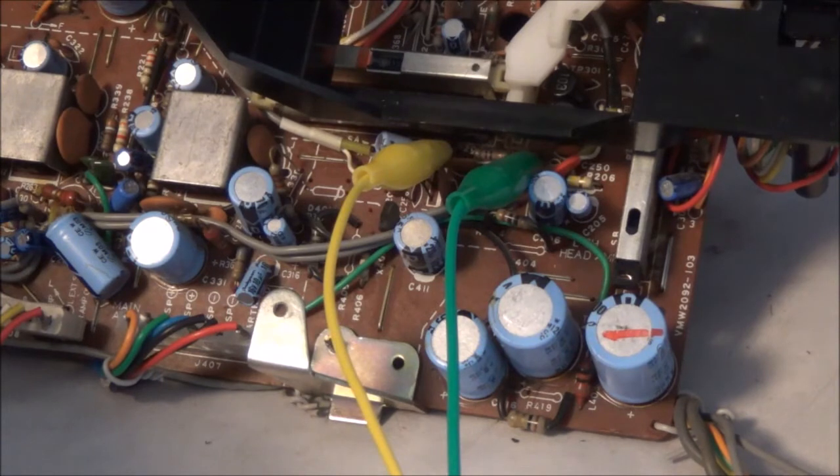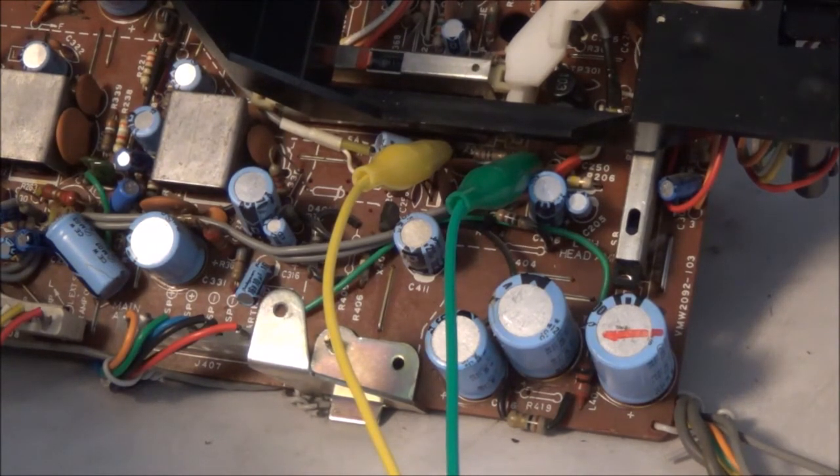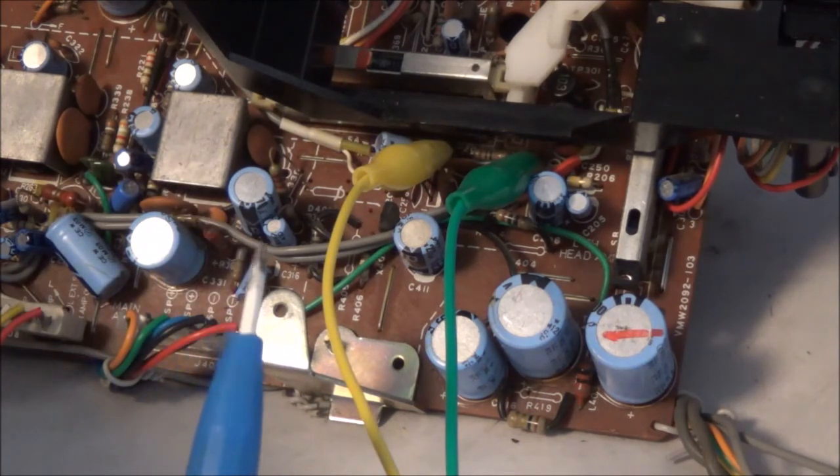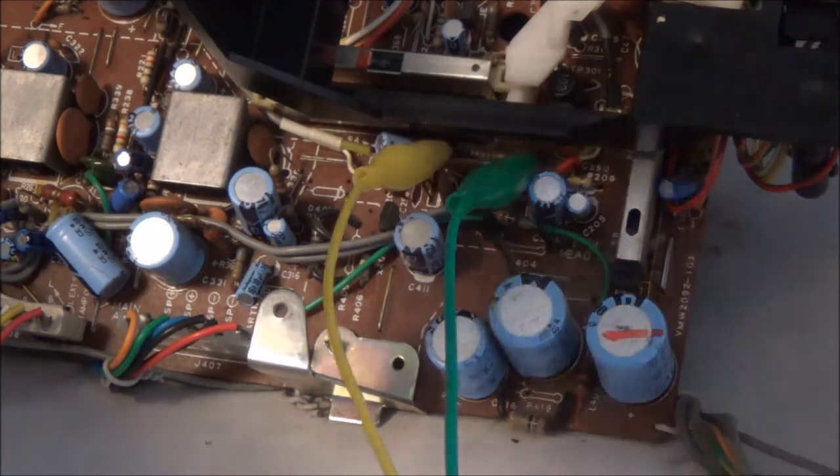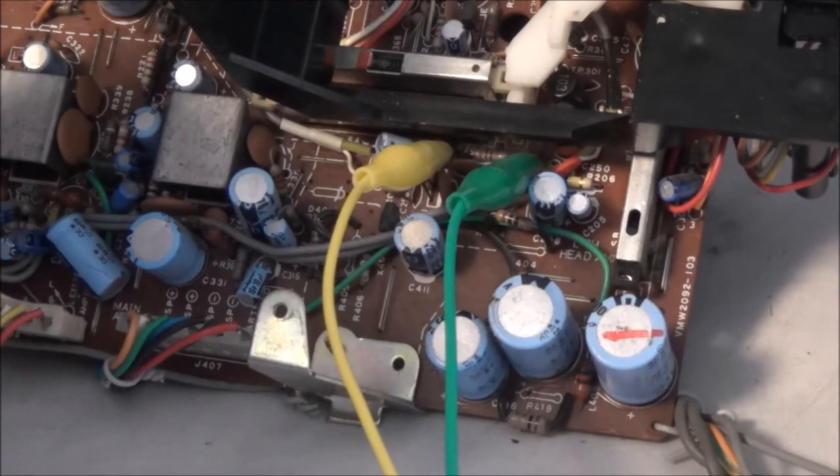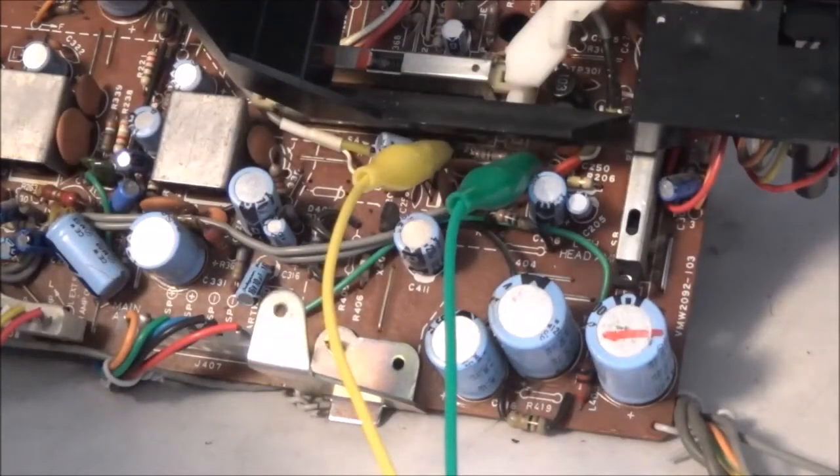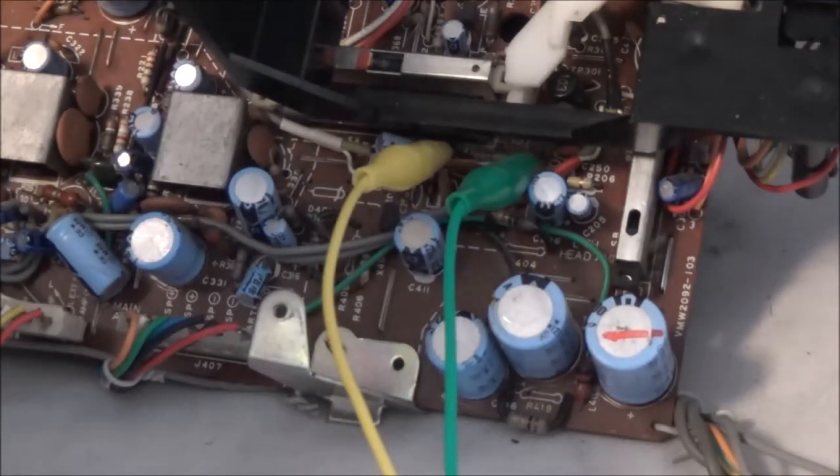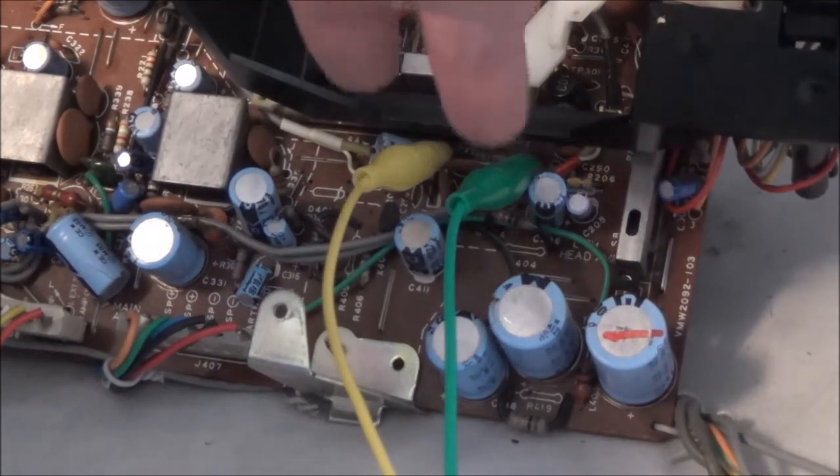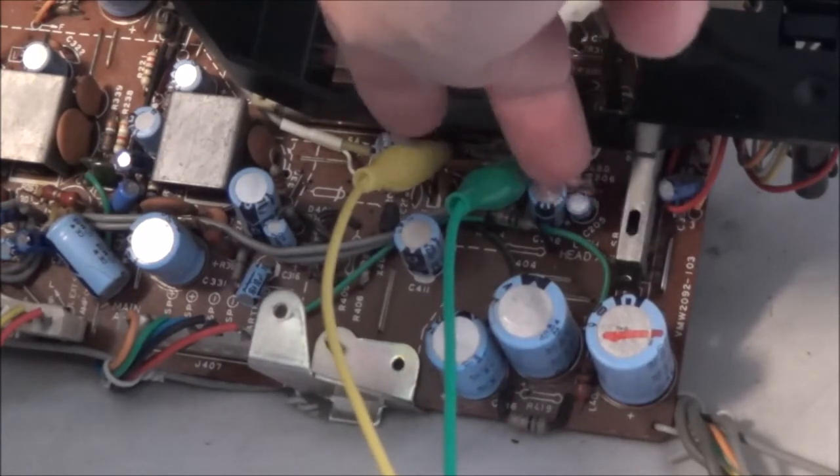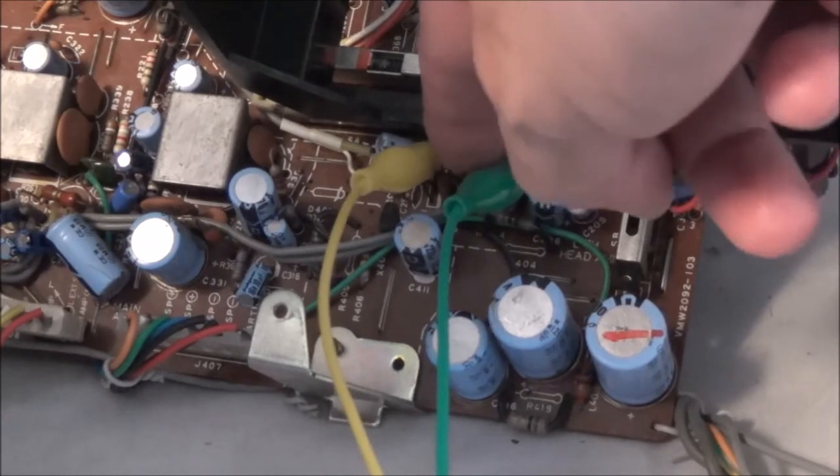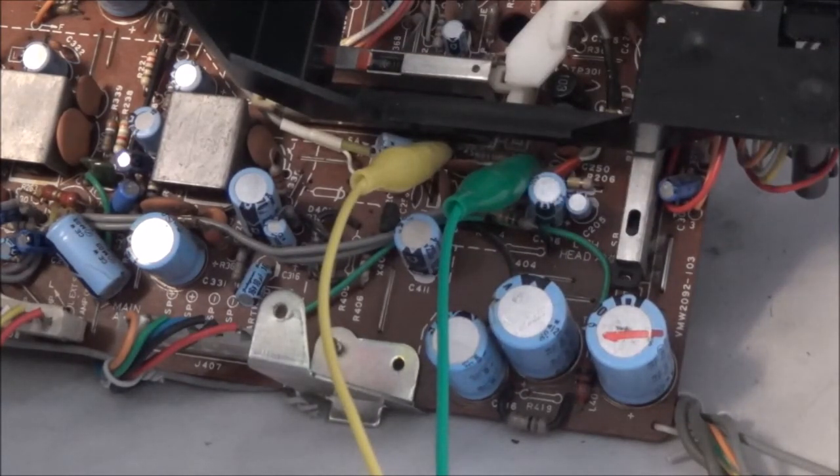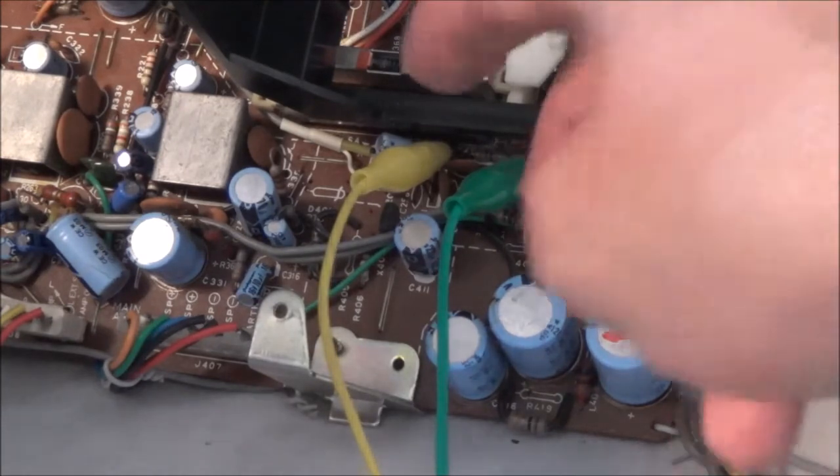We connect the VTVM across TP201 and TP203. TP201 consists of two test points and in between here is a 10 ohm resistor. That's how we figure out using Ohm's law the bias current. Once we measure the voltage here we know the resistance and that's going to give us the current because i equals e over r.